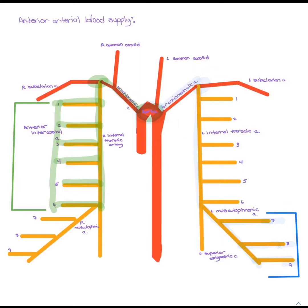Arterial supply for intercostal spaces 7, 8, and 9 originates at the aorta, travels to the brachiocephalic artery, to the subclavian artery, down the internal thoracic artery, to the musculophrenic artery, and then to the anterior intercostal arteries.